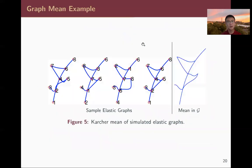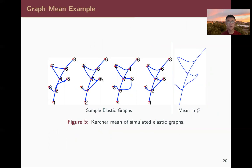In a simulation to study the mean of these samples, we have four observations in different node orderings. Their mean has exactly the same shape — the correct representative shape for these samples.